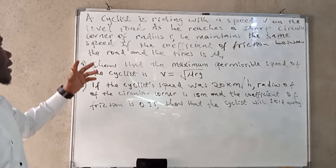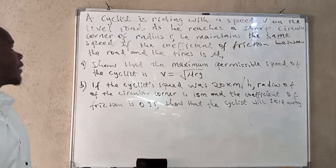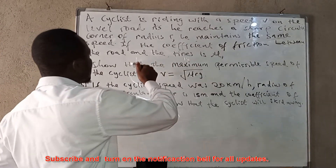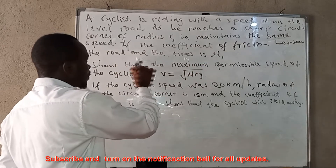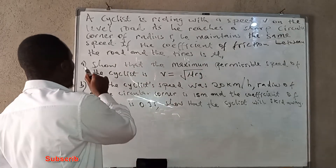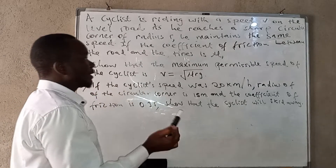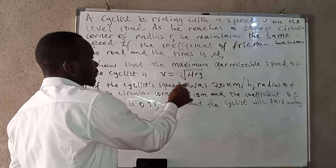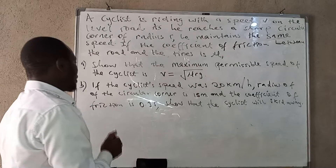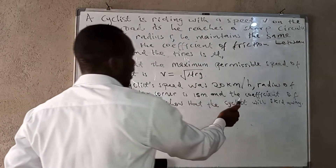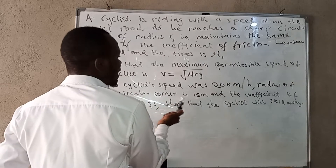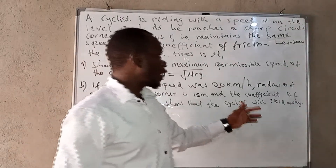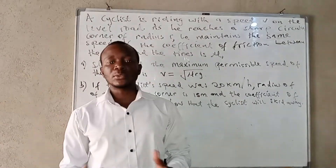In this video we're going to look at this question: a cyclist is riding with speed v on a level road. As he reaches a sharp circular corner he maintains the same speed. If the coefficient of friction between the road and the tires is mu, part a: show that the maximum permissible speed of the cyclist is given by v equals the square root of mu times r times g. Part b: if the cyclist's speed was 20 kilometers per hour, the radius of the circular corner is 15 meters, and the coefficient of friction is 0.35, show that the cyclist will skid away.